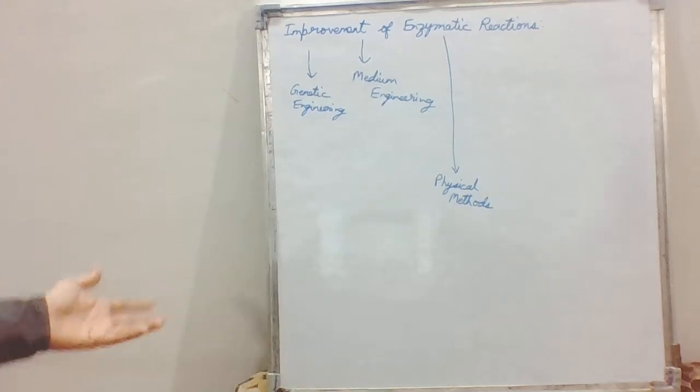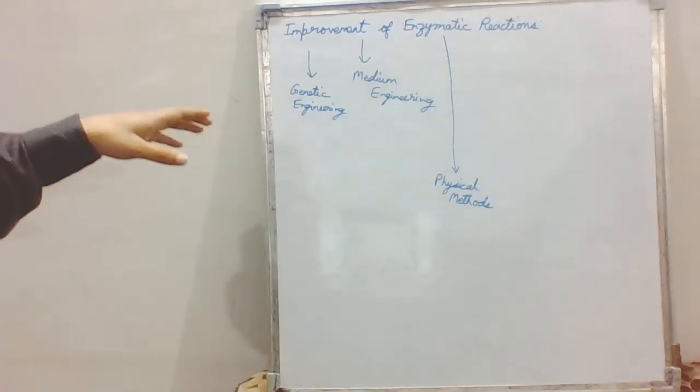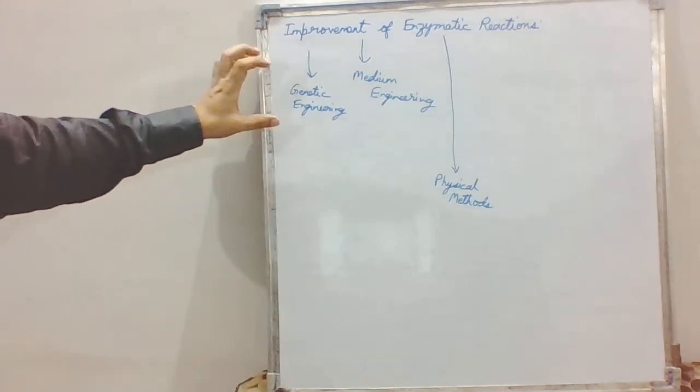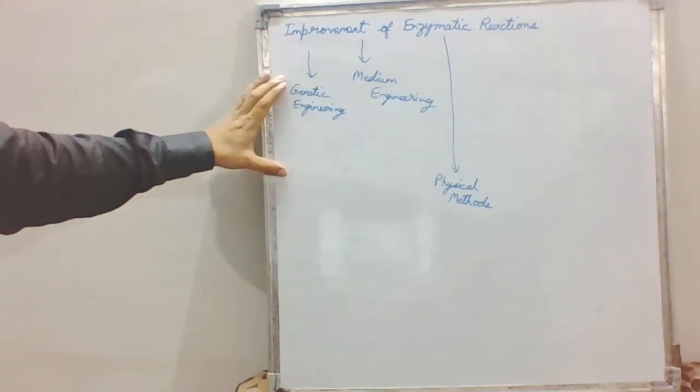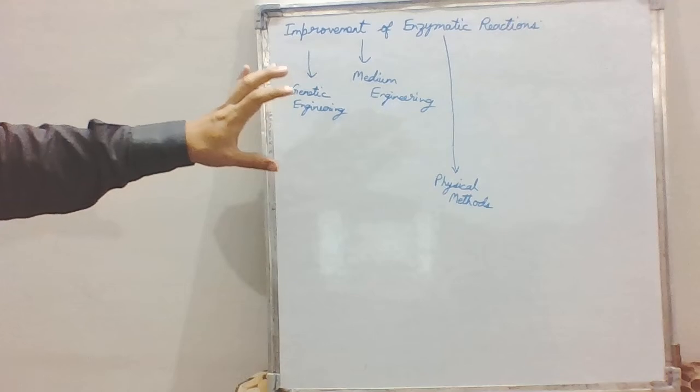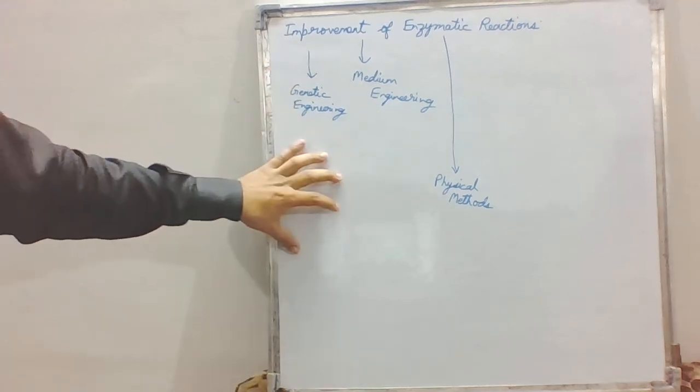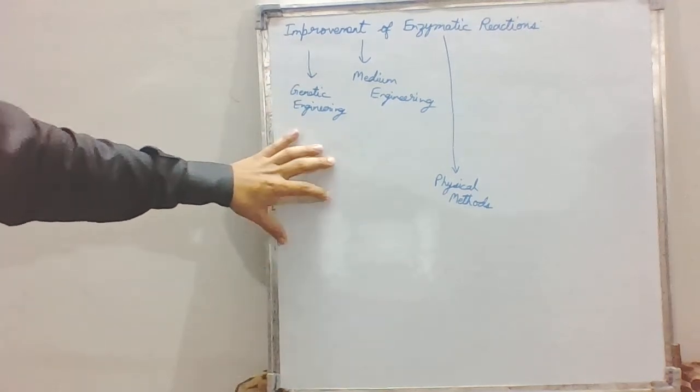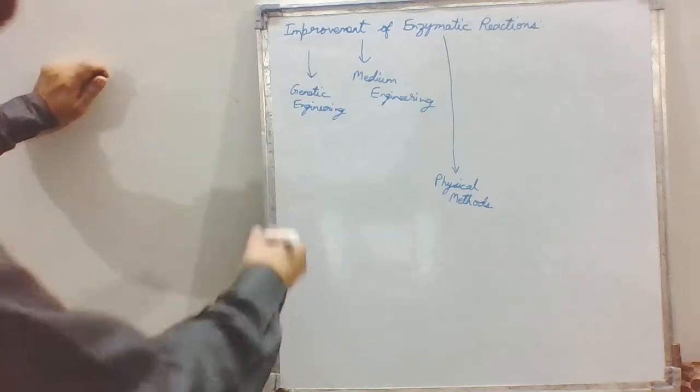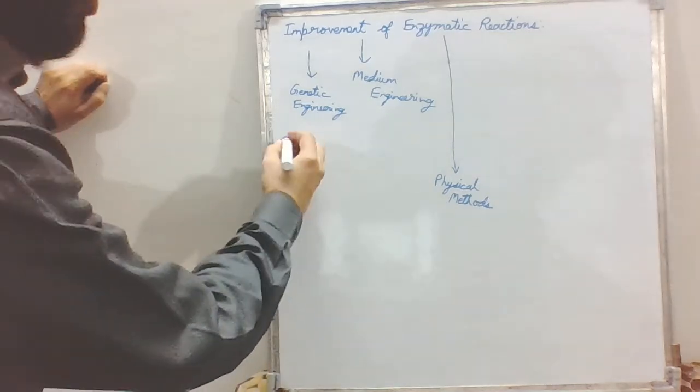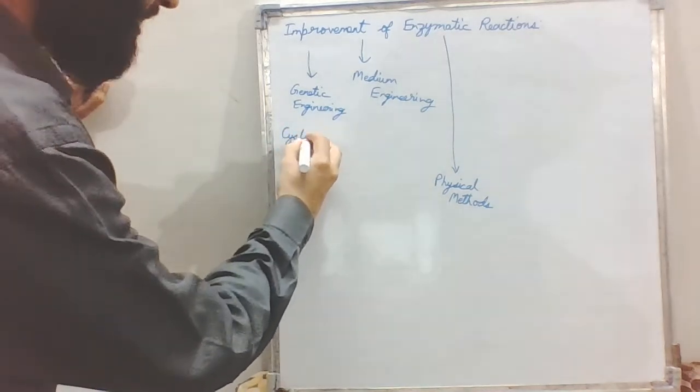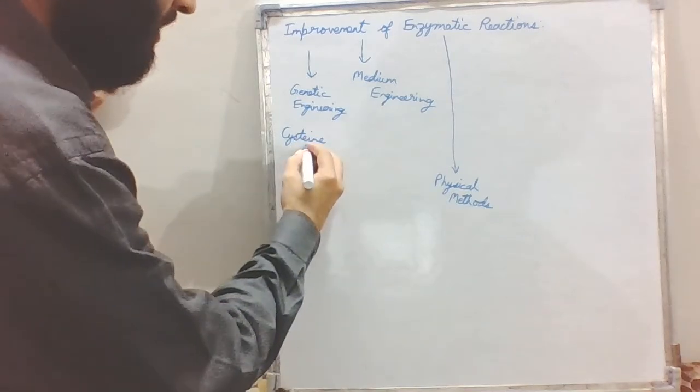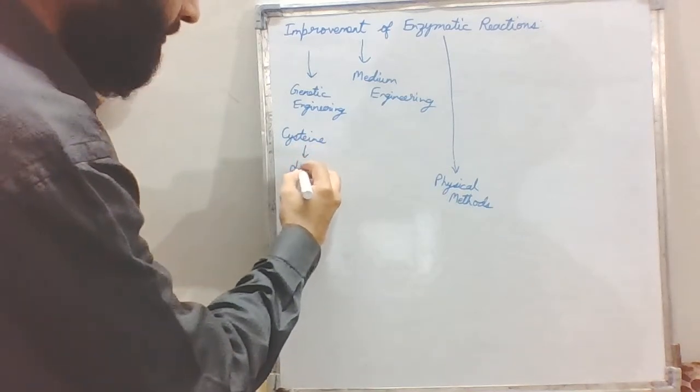By genetic engineering, by using point mutations, by converting various amino acids, to increase the robustness of the enzyme we can incorporate cysteine residues at various places. Cysteine is an amino acid which forms disulphide linkages.